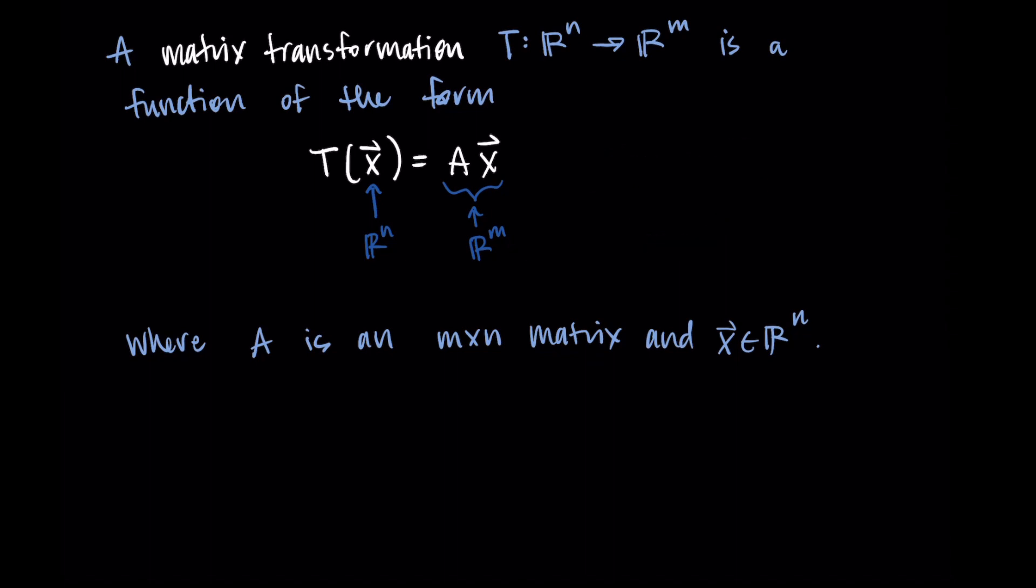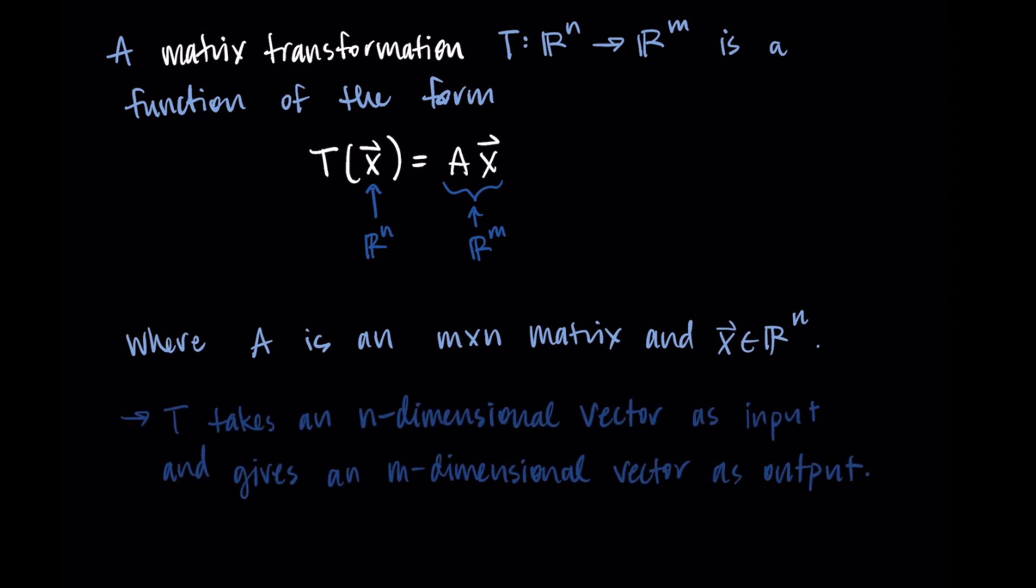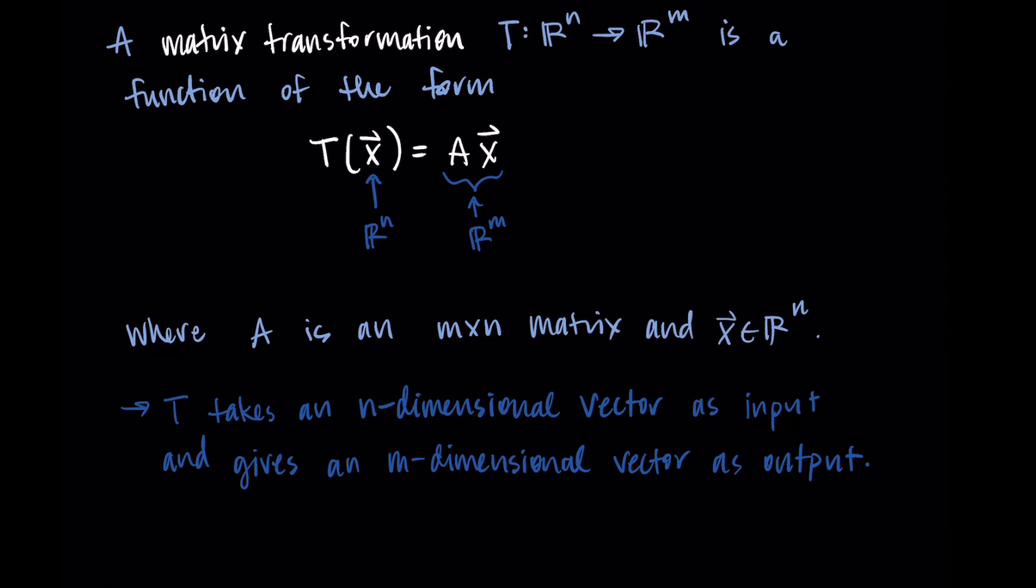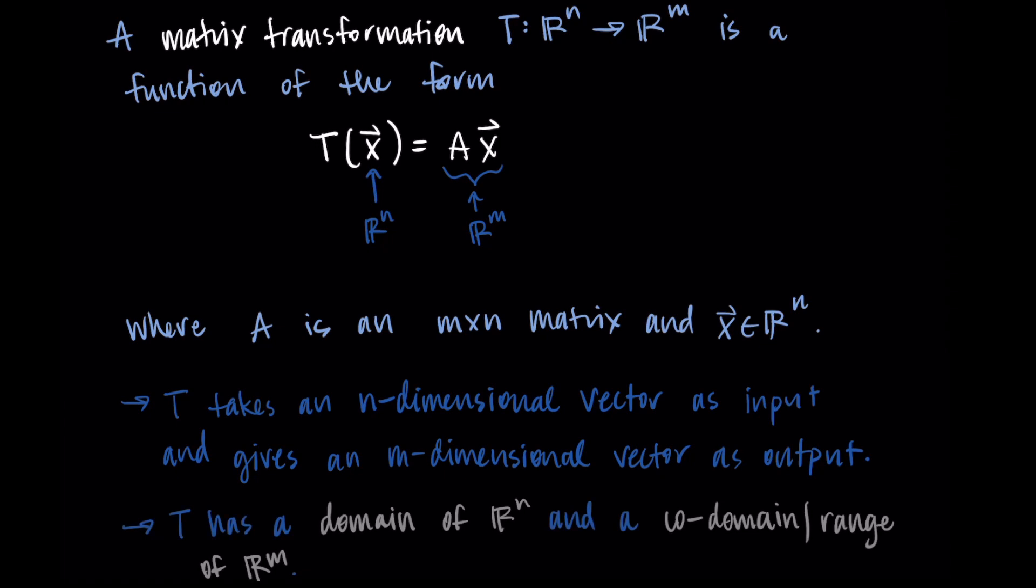This is everything we've been doing before with doing a matrix times a vector. It's just a new way to write it with this function notation and thinking about inputs and outputs. So we would summarize this by saying that T takes an n dimensional vector as input and gives an m dimensional vector as output. And we would also say that T has a domain of R^n and a codomain or range of R^m.